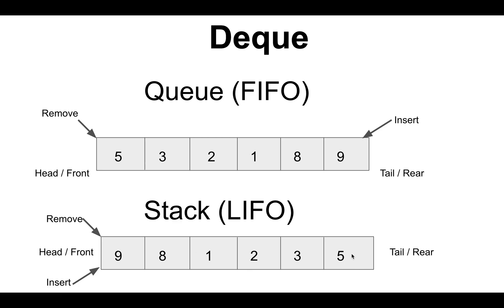So 5 is pushed first, then 3, then 2, then 1, 8, and 9. The head pointer points at this index, and when we remove an element, 9 will be removed first. This is how Deque can be used as either a queue or a stack — it supports insertion and deletion from both ends.